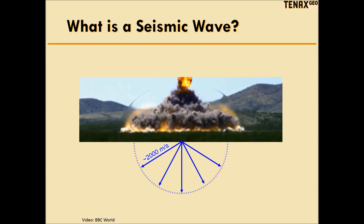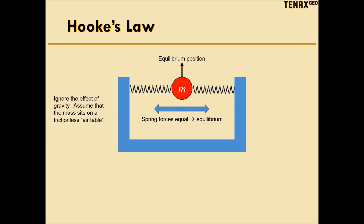A seismic wave is similar to the shockwave, except it travels down into the earth more slowly. The speed of seismic compressional waves, or P-waves, in real rocks varies from about 1,500 meters per second in water to 6,000 meters per second in very rigid rocks like limestone. Hooke's Law from high school physics is actually the foundation of most seismic processing.